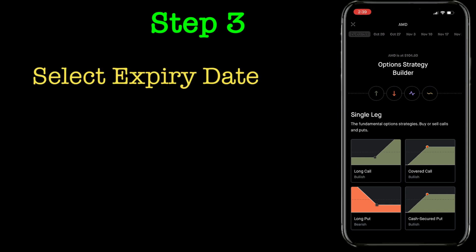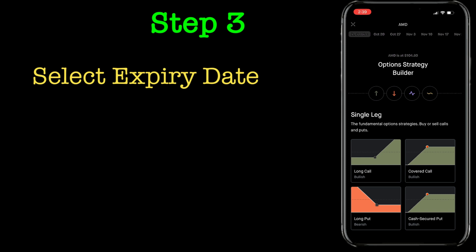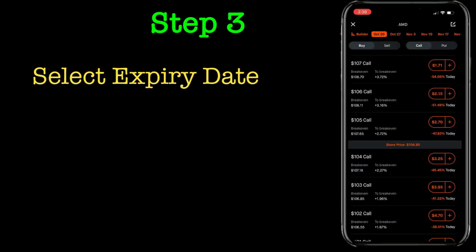Step three would be selecting the right expiry date. Expiry date is critical when you are buying a call — you have to know by what week or day you are expecting the stock to make a move. The longer the expiration date you get, the more premium you have to pay, so you have to be mindful of that. As an example, I am selecting October 20, which is a week out from now.